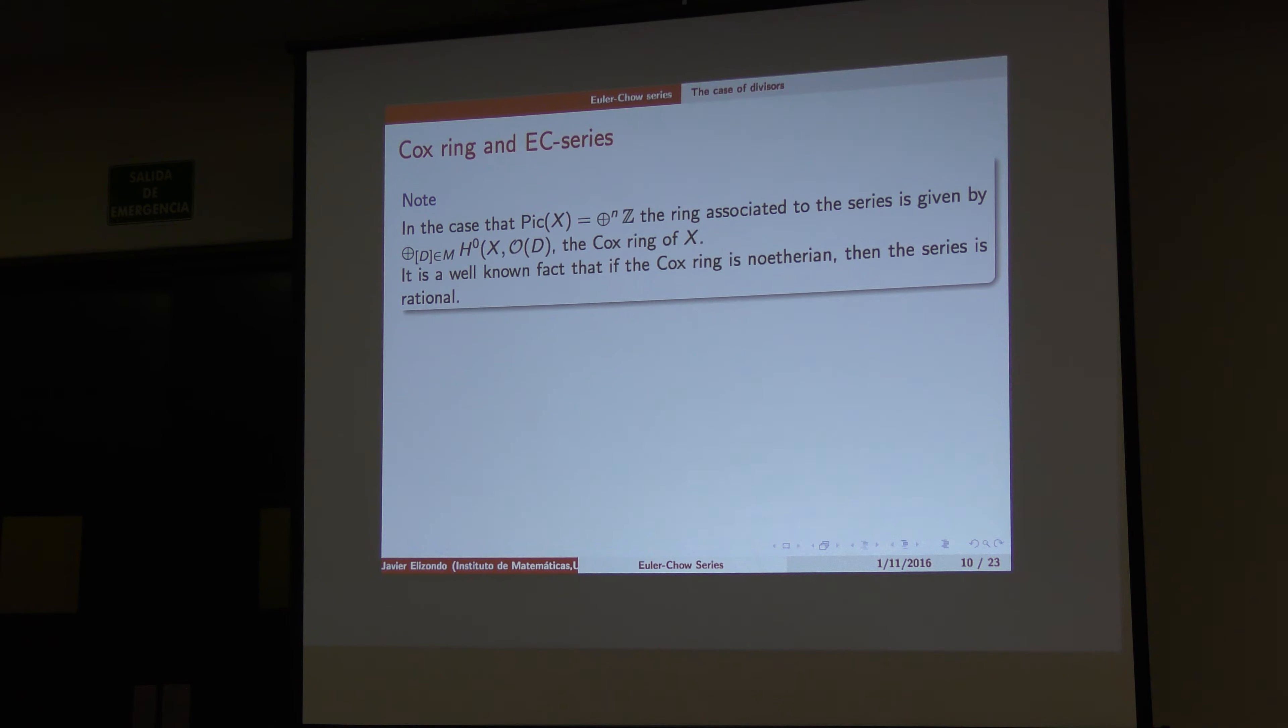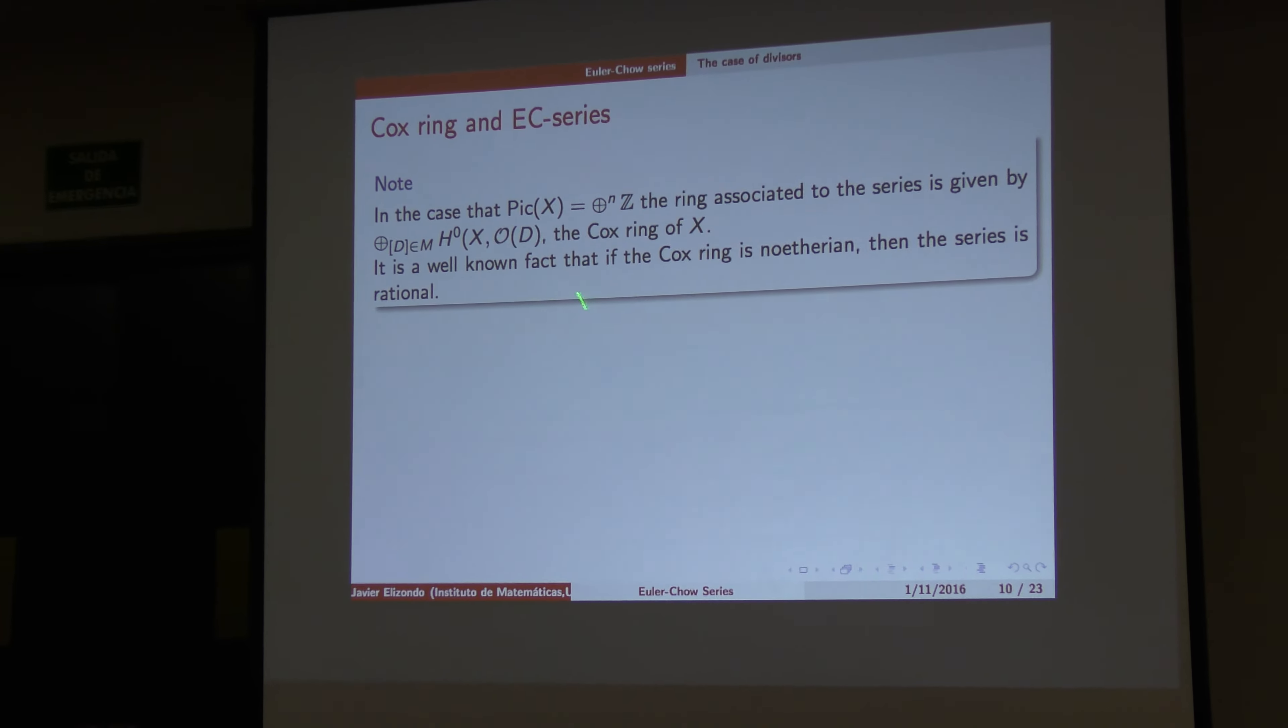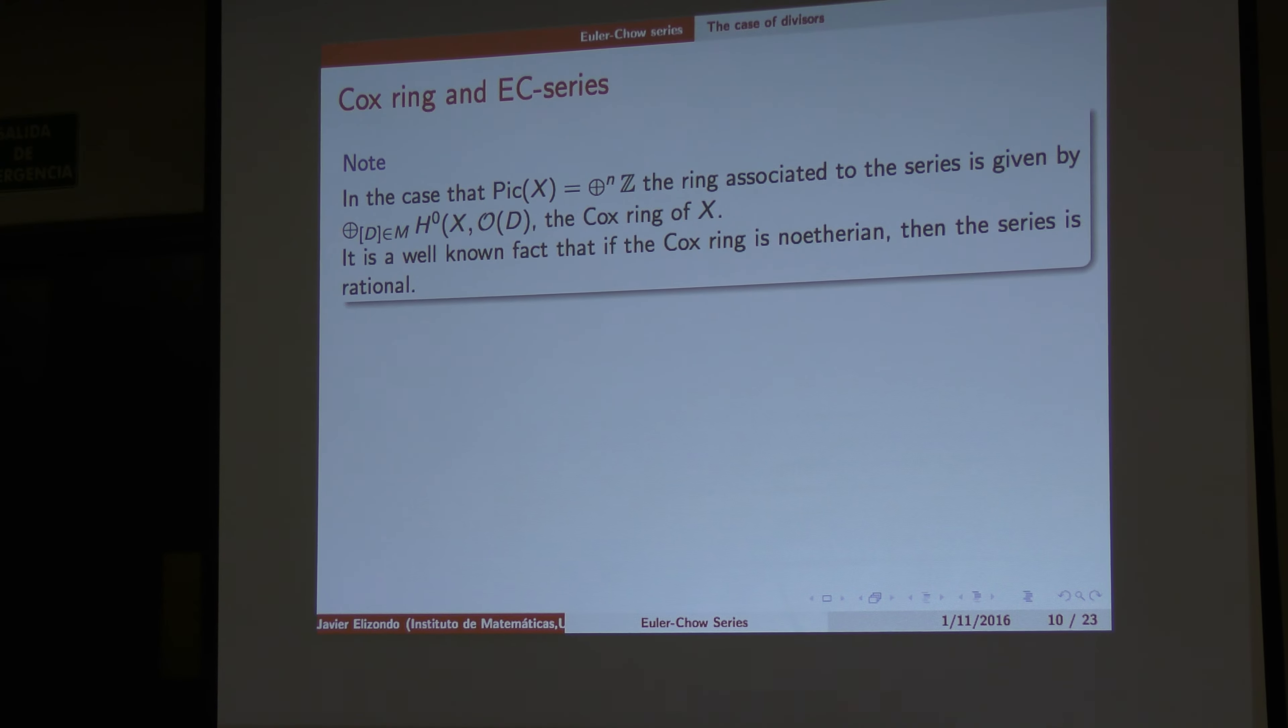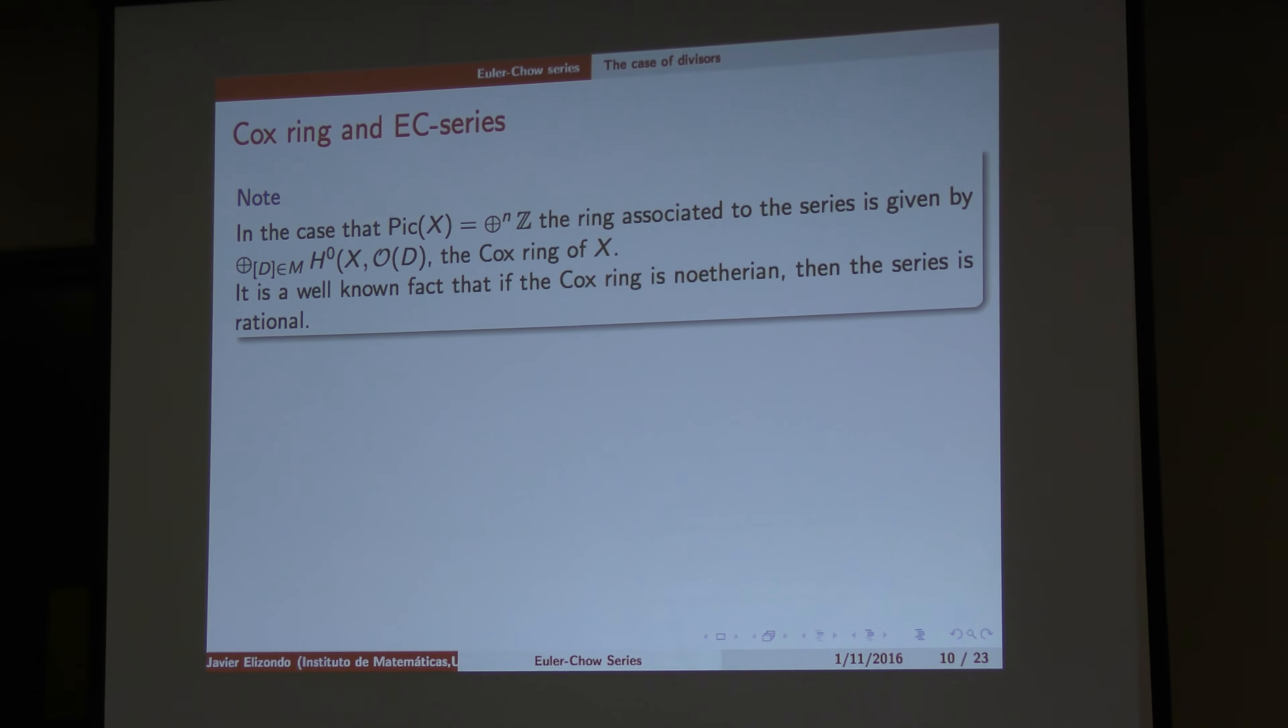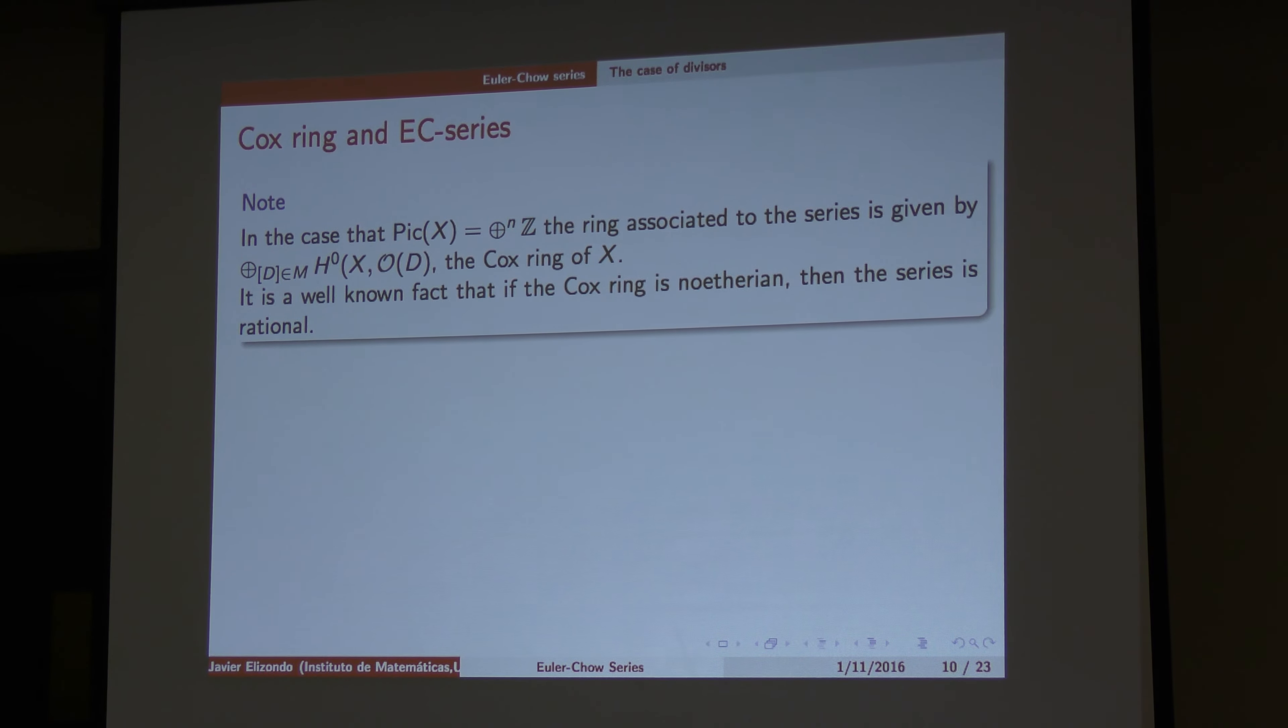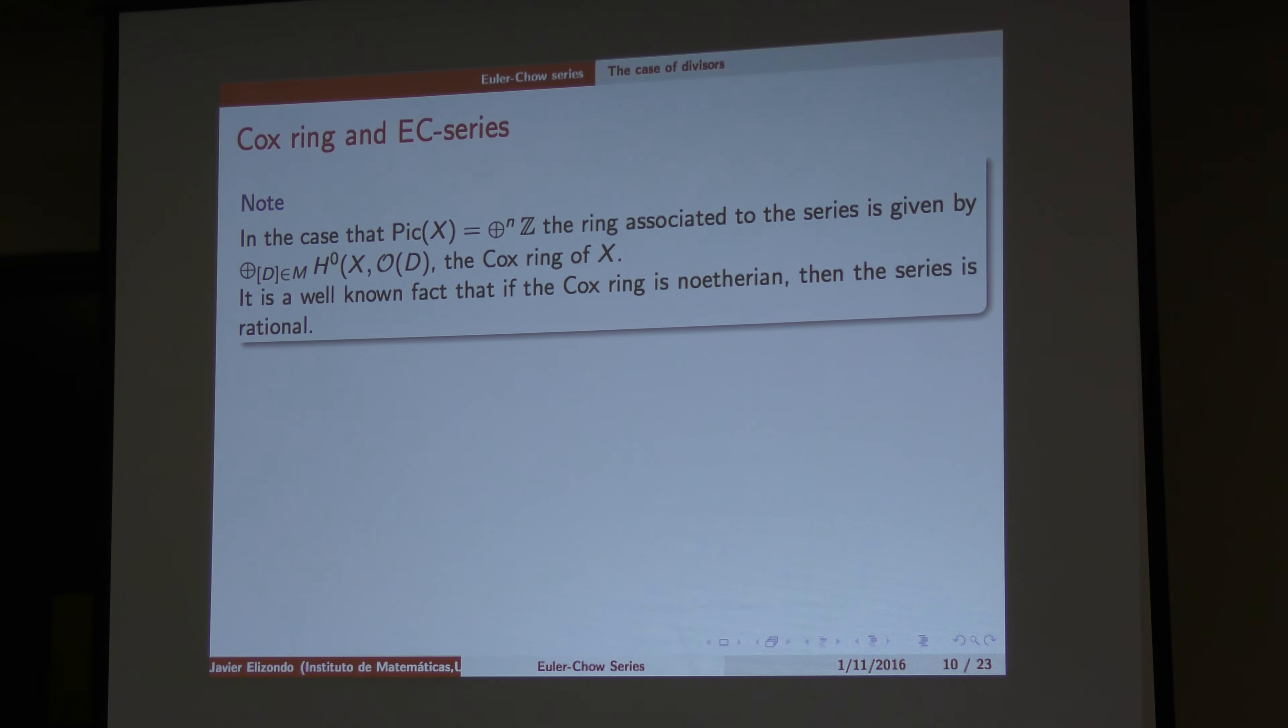So, when you have this situation, all the coefficients are the dimension of this space, right? So, you take the ring associated to the series, and you got exactly this, that is the Cox ring. It's well known that the Cox ring is finitely generated, therefore it's rational.